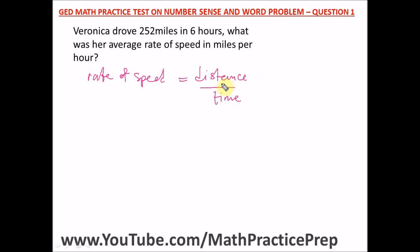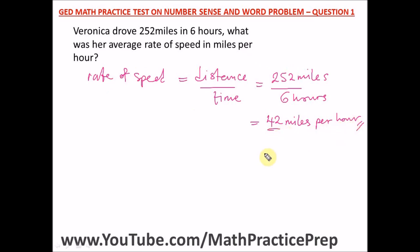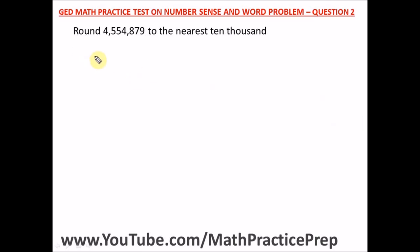Our distance is 252 miles and the time is six hours. You are allowed to use the calculator — when you divide 252 by six you get 42 miles per hour. So her average rate of speed is 42 miles per hour.